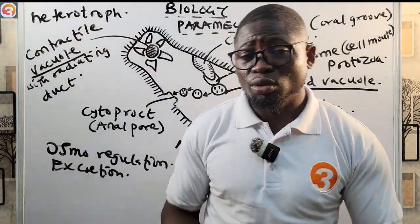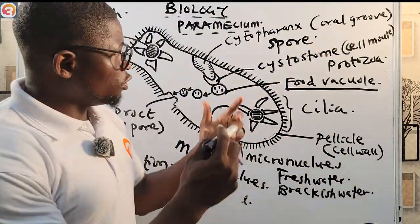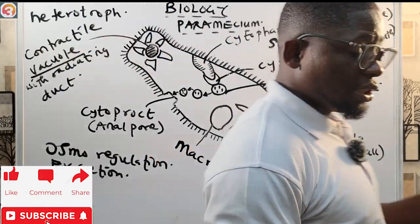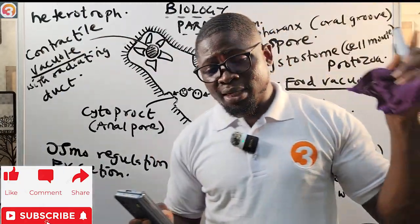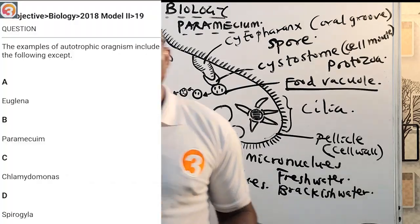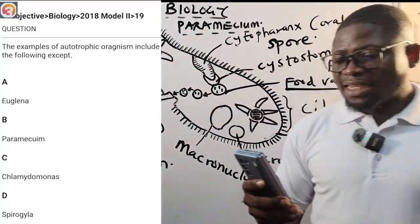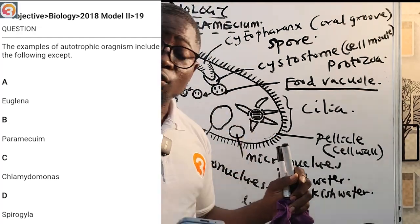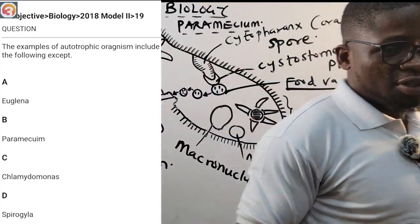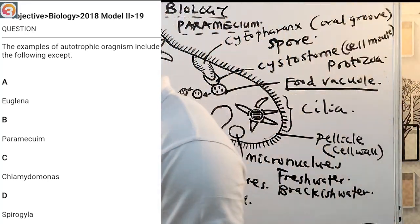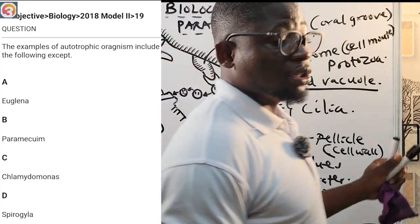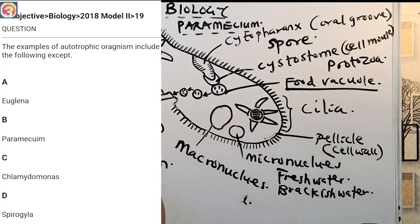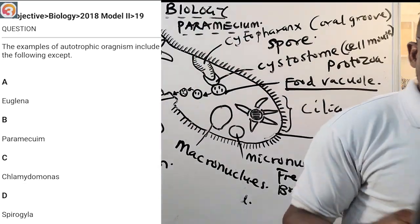Now let's return to the 2018 question number 19: examples of autotrophic organisms include the following except — A) Euglena, B) Paramecium, C) Chlamydomonas, D) Spirogyra. The correct answer is B — Paramecium — because paramecium is heterotrophic; it depends on other living organisms for energy.